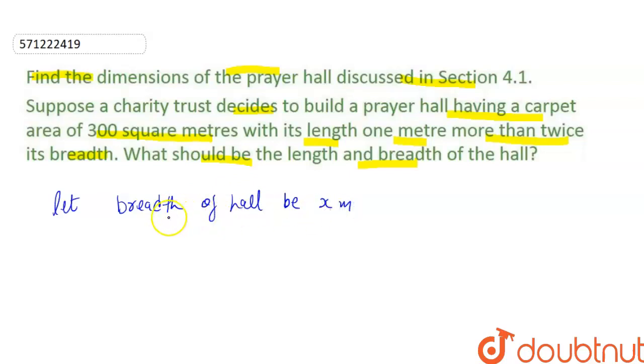If the breadth is x, then length of hall will be 1 meter more than twice its breadth. Twice the breadth plus 1 meter more. So the length is 2x plus 1 meters.